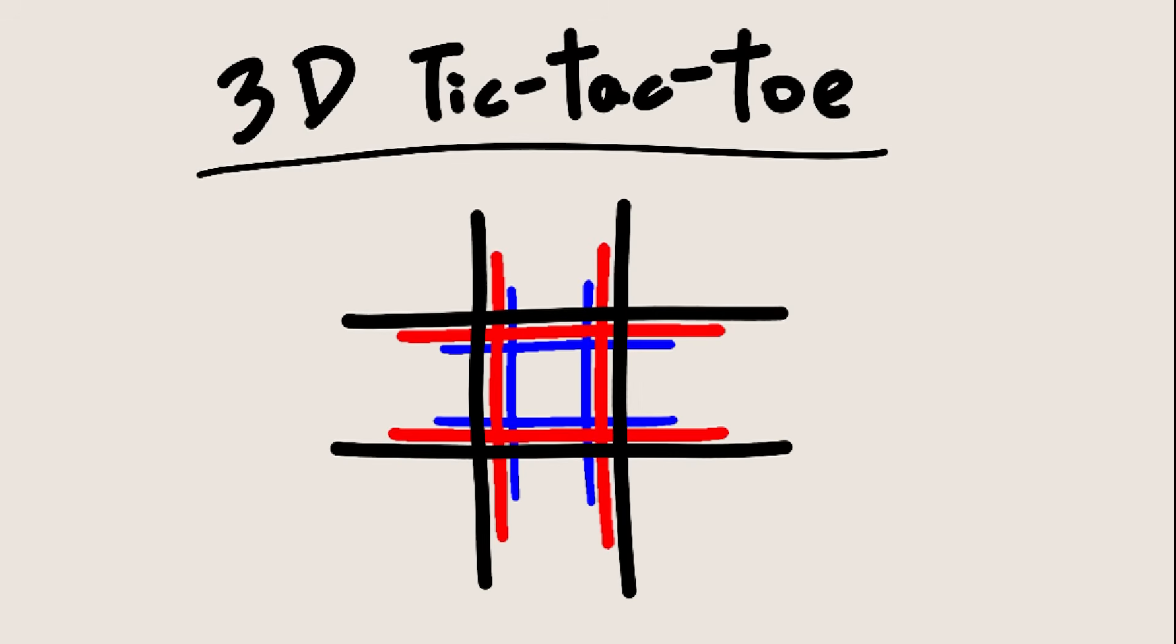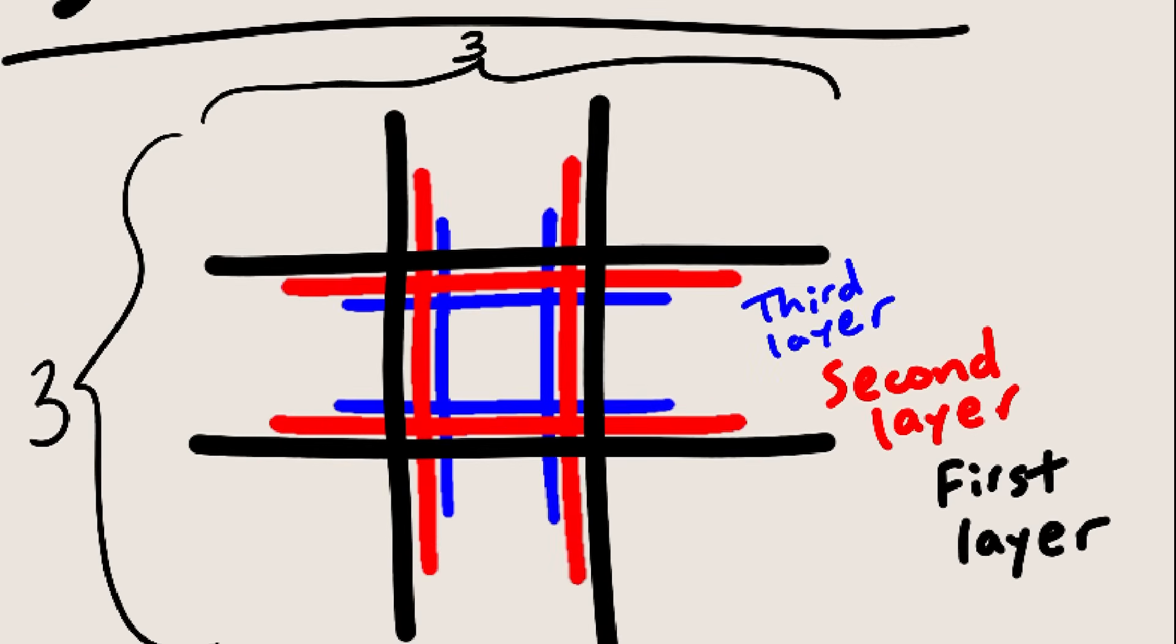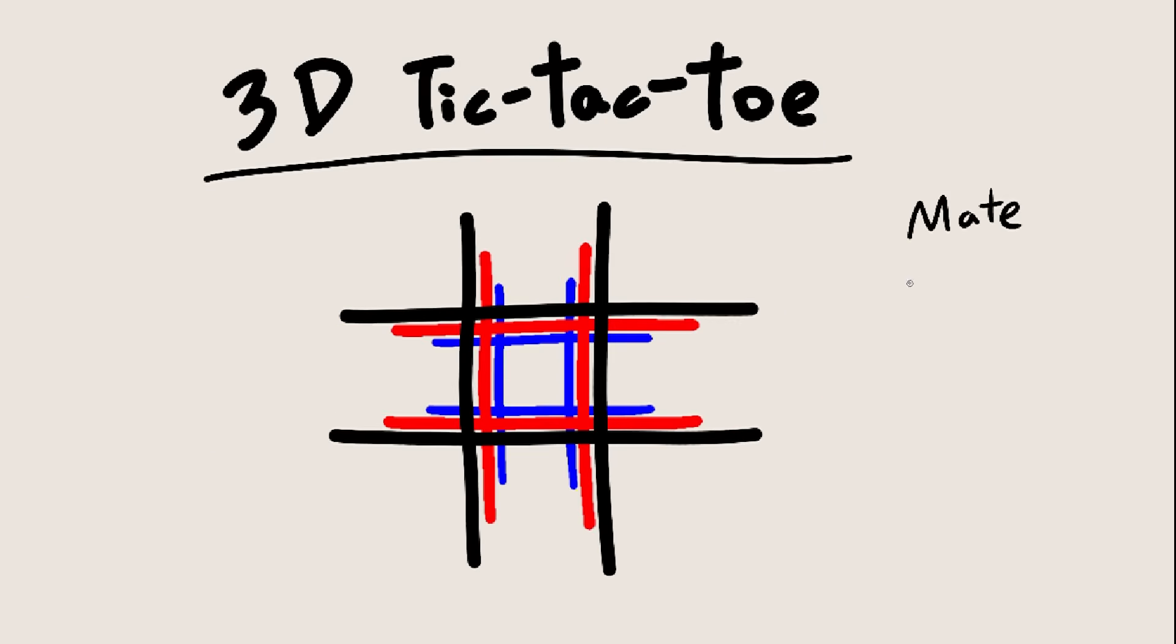3D tic-tac-toe is quite simple. There is a 3x3x3 grid. This is how we're going to draw it - we have three different colored layers, and each layer is 3x3. Don't worry, it's not going to get too confusing, because spoiler alert, the game won't last more than four moves.